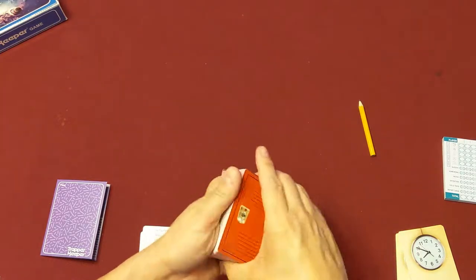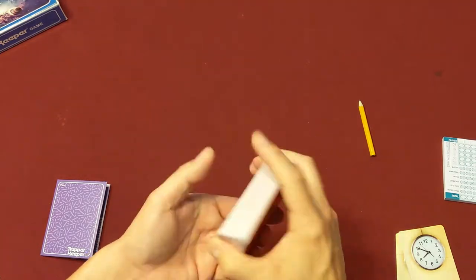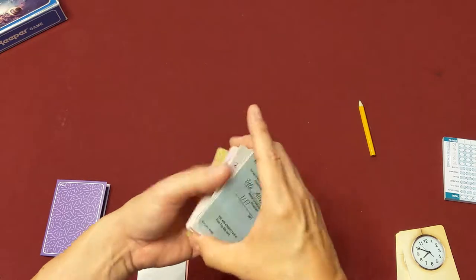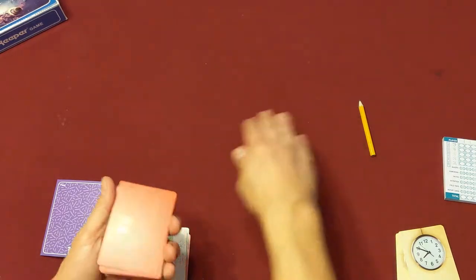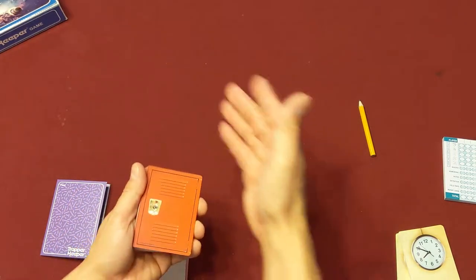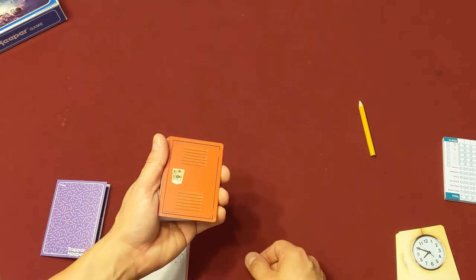To set up a game of Trapper Keeper, you're going to take the locker cards here which contain lots of different types of cards, and you're going to deal them into nine stacks. All face down, and turn the top card of each stack face up.